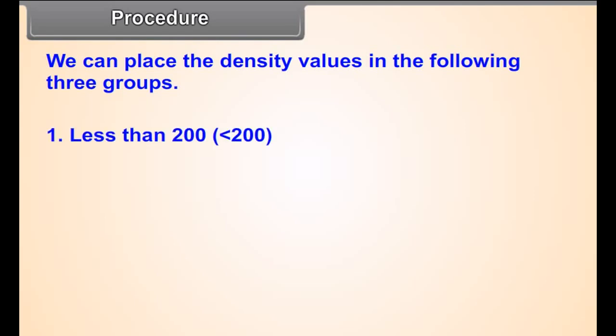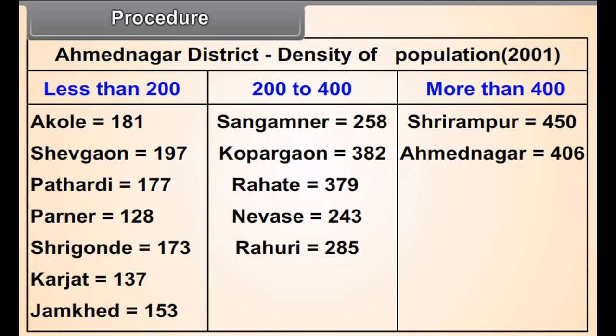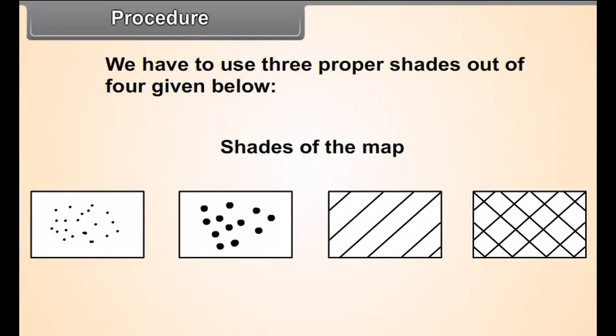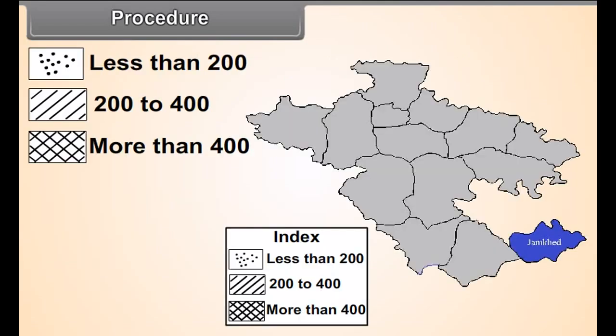Procedure. Consider the density of population of the different Talukas in Ahmadnagar district. Find the maximum and minimum values of the density of population. We can place the density of population in the following three groups. Number 1. Less than 200. Number 2. 200 to 400. And number 3. More than 400. Check the density of population of the Talukas in the table alongside.